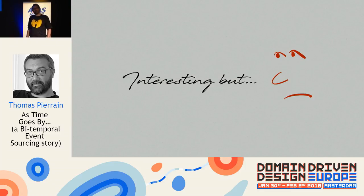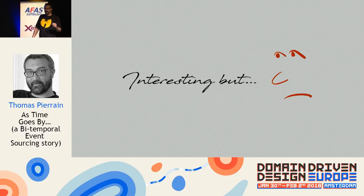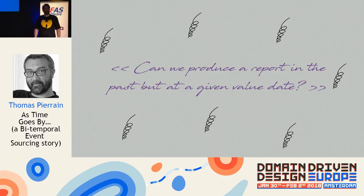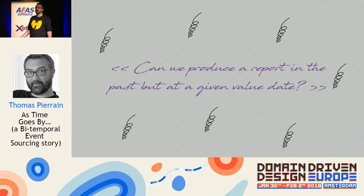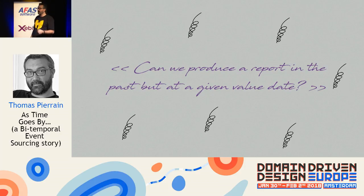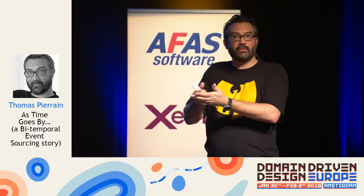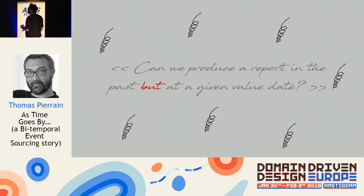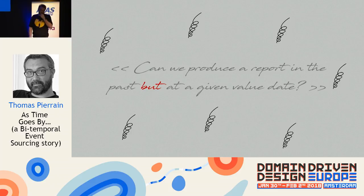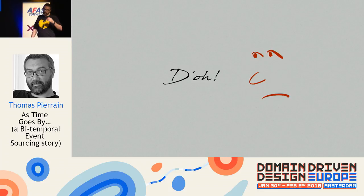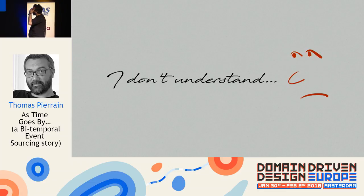One of the domain experts — a mix between IT guy and domain expert — said: 'Okay, interesting. But can we produce a report in the past at a given value date?' I said yes, with event sourcing you can get back in the past, and you can pick your date. He said no, no, no — 'Can we produce a report in the past but at a given value date?' I realized there was an implicit concept I was missing.